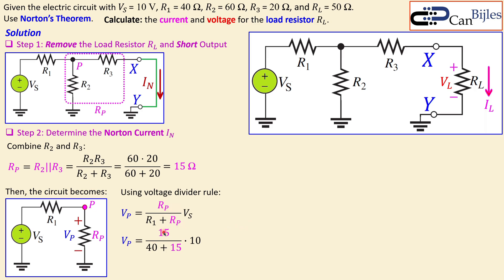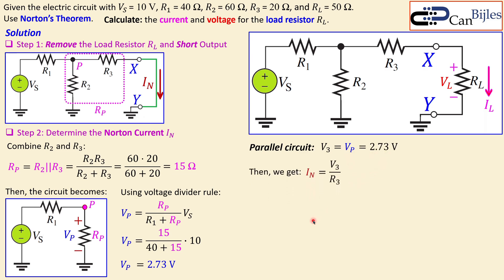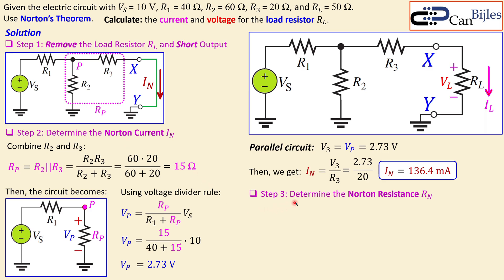Substituting the values — RP = 15 ohms, R1 = 40 ohms, Vs = 10 V — gives VP ≈ 2.73 volts. This is also the voltage across R3, so V3 = 2.73 V. Then using Ohm's law, In = V3 / R3 = 2.73 / 20 = 136.4 milliamps. We have now determined the Norton current.